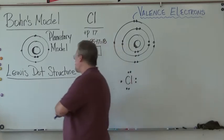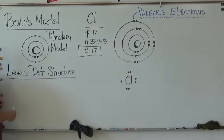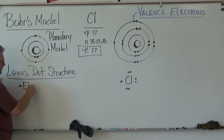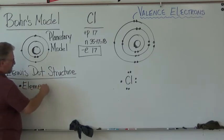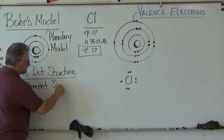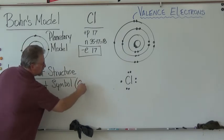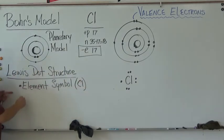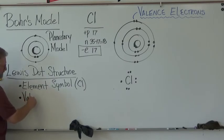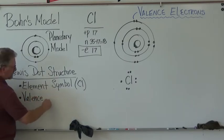So this is the Lewis dot structure. So key thing to write down in your notes, on the Lewis dot structure, the only thing Lewis is really interested in is, number one, the element symbol. For our example over there, chlorine.